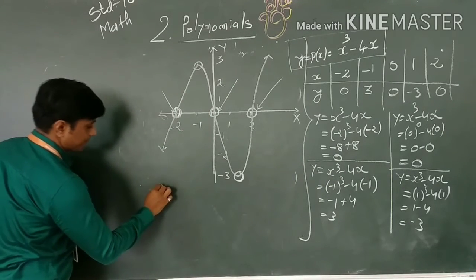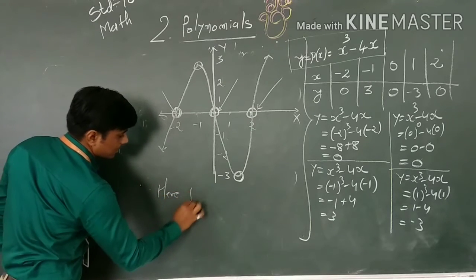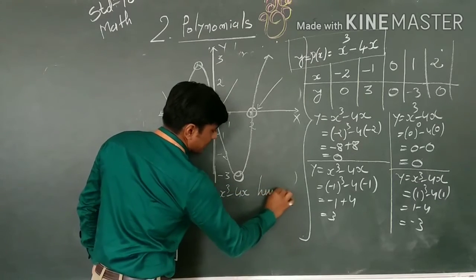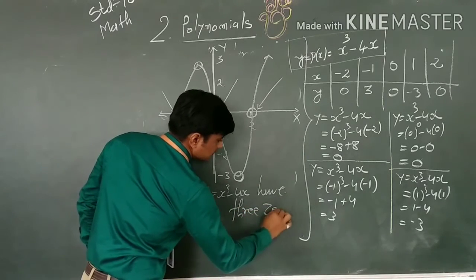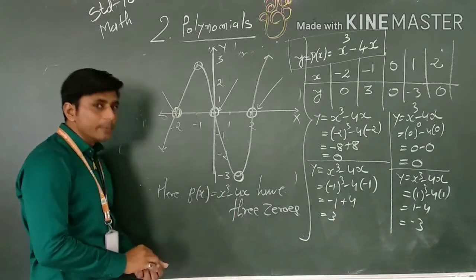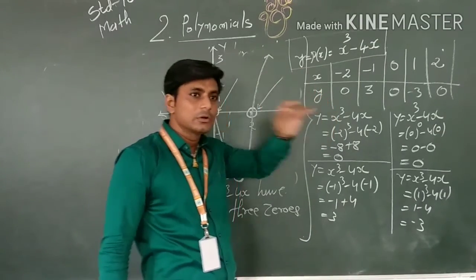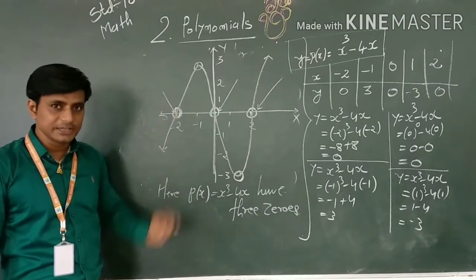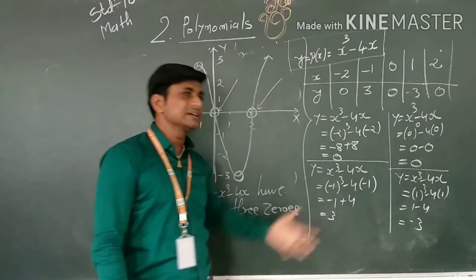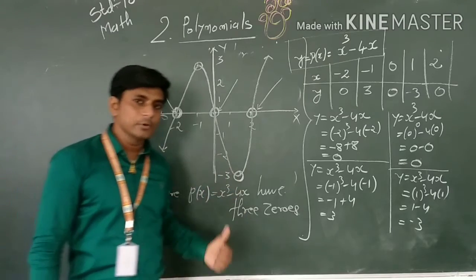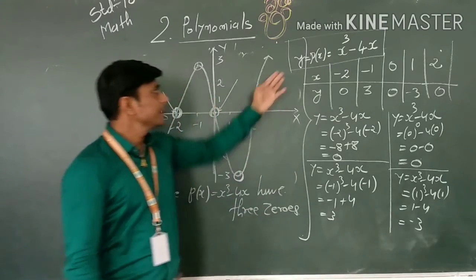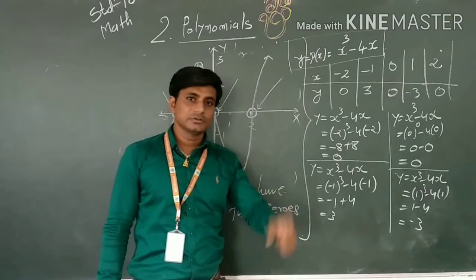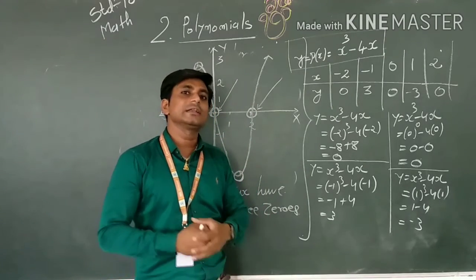If we are asked how many zeros this polynomial has, we say 3 zeros. However, we cannot say a cubic polynomial always has exactly three zeros. We say a cubic polynomial has at most three zeros. In our previous video, we discussed that a quadratic polynomial has at most two zeros. Here, a cubic polynomial has at most three zeros — meaning it may have no zero, one zero, two zeros, or three zeros.